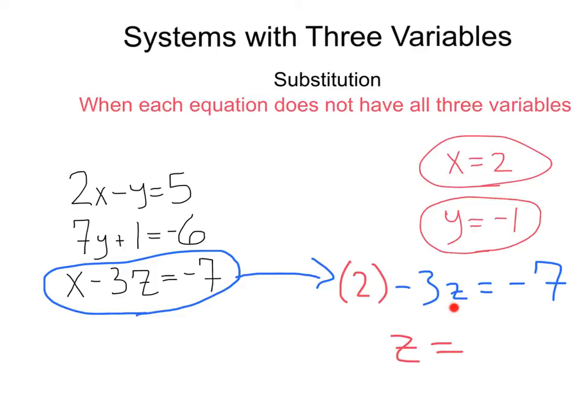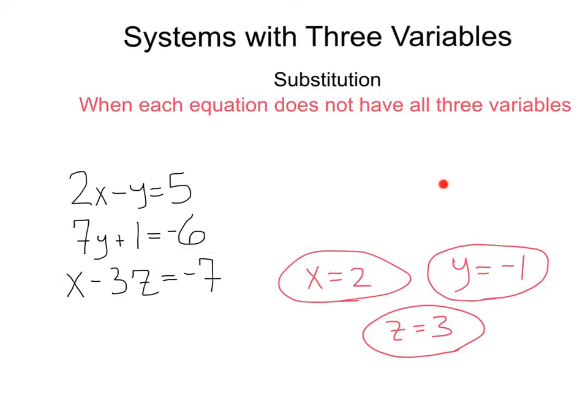That'll give us 2 minus 3z equals negative 7. Solving for that, we're going to get z equals 3. And there we have our answer. x equals 2, y equals negative 1, z equals 3. The solution to this system.